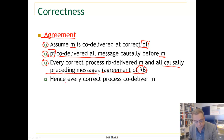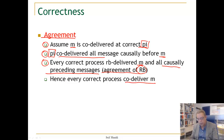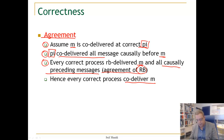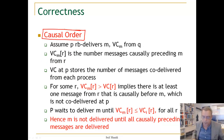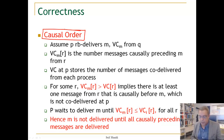Hence, since they have been delivered, every correct process can deliver M, because all earlier causally preceding messages have been delivered. Now let us look to the last important property, which is the property of causal order.